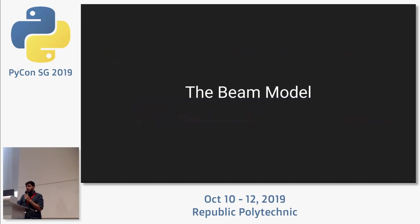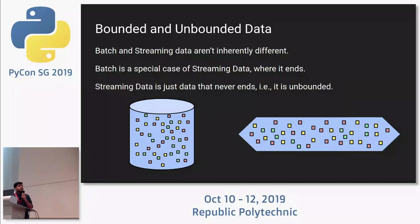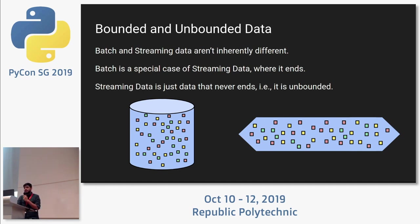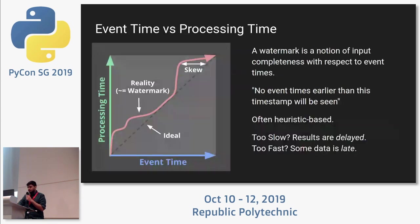The core of Apache Beam is the Apache Beam model, used to model data pipelines. To understand it, we first need a distinction between bounded and unbounded data. Batch and streaming is an inaccurate term — batch and stream just mean how you are processing data, not what the data is. Bounded data is your typical batch data where it ends; unbounded data is streaming data where it is infinite. Bounded data is just your streaming data at one point in time.